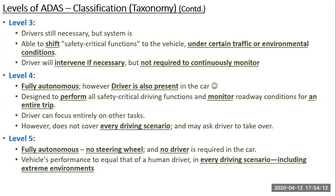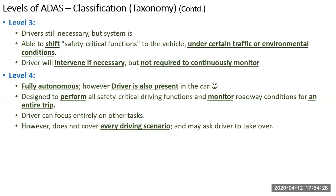In a level five ADAS car, everything is automatic — you don't even have a driver or a steering wheel. Your grandmother orders a car on her app, it comes to her doorstep with no driver, she sits and goes away. That is the holy grail of autonomous driving. I'll pause for about 30 seconds for the audience to review levels three, four, and five, and also levels zero, one, and two.